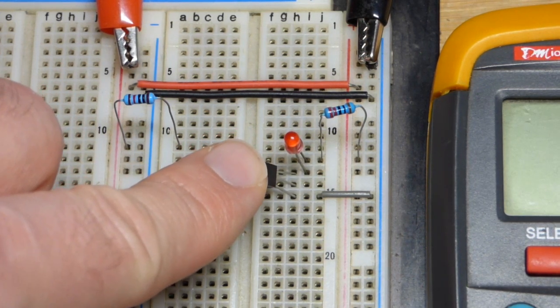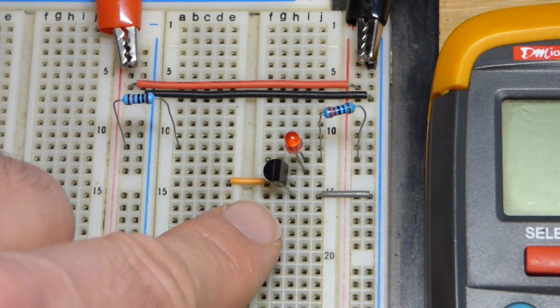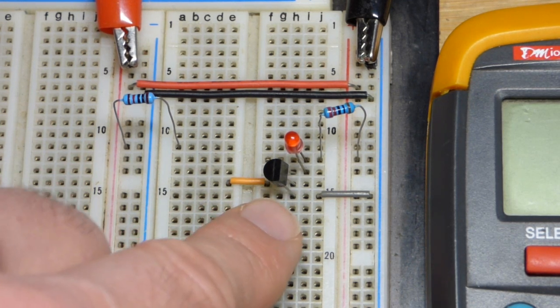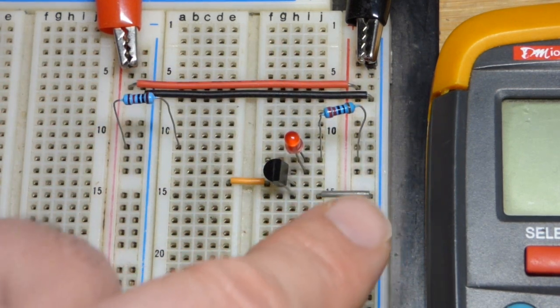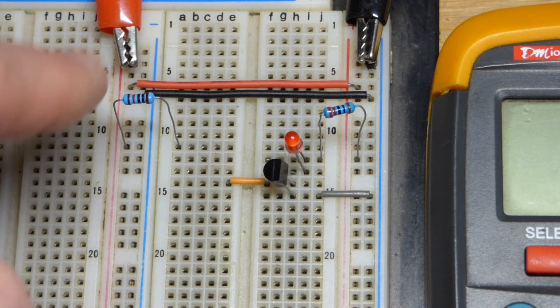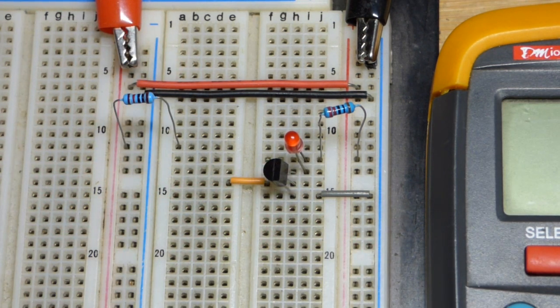And so that's what we would take worst-case scenario, 100 gain, which means if we wanted a hundred milliamps of current to flow through this circuit, we would need about one milliamp of current going base to emitter right there.